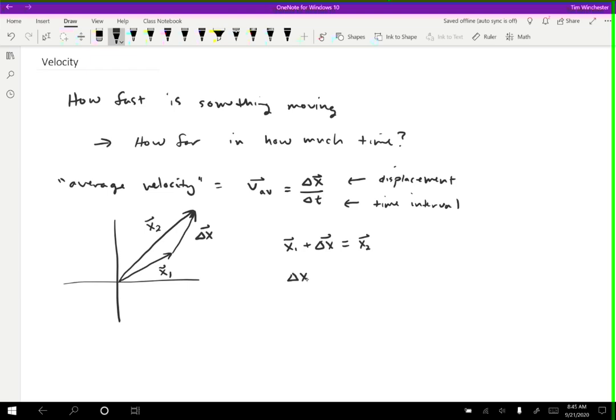So you can algebraically rearrange this. Delta x equals x2 minus x1. Right, so both of those are equivalent. You can use whichever one makes the most sense to you.